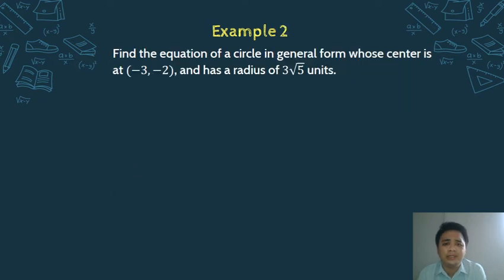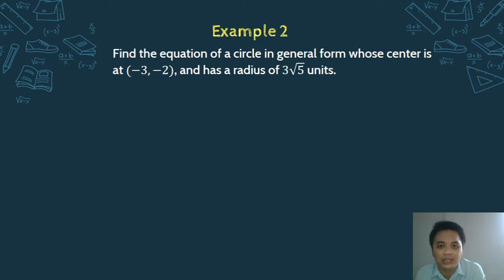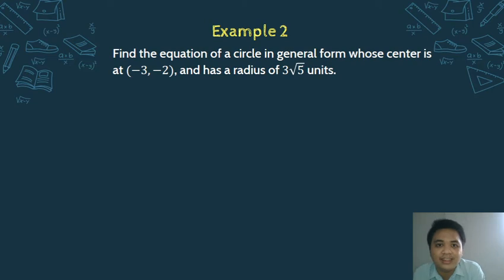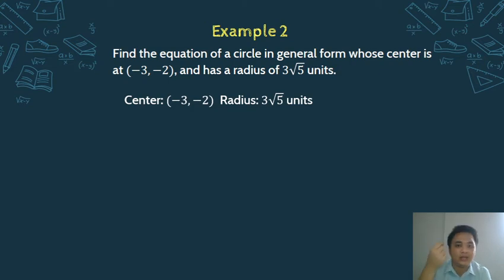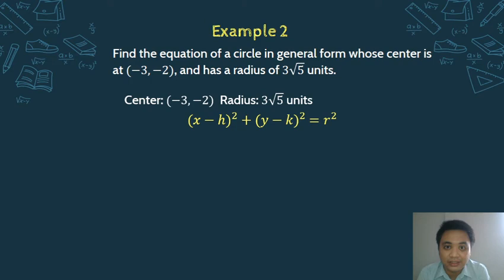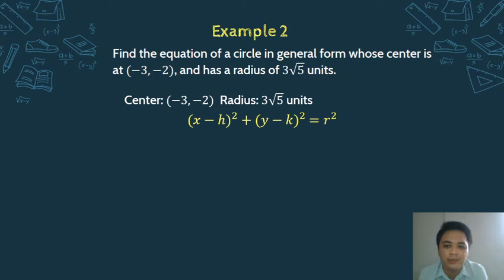For Example 2, we will find the equation of a circle in general form whose center is at negative 3, negative 2, and has a radius of 3 square root of 5 units. What is asked? The general form. What are the given? Center: negative 3, negative 2; radius: 3√5 units. Since center and radius are given, we start with the standard form, then transform to general form.